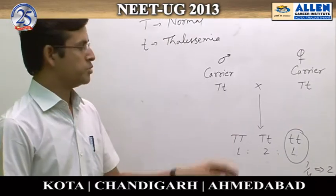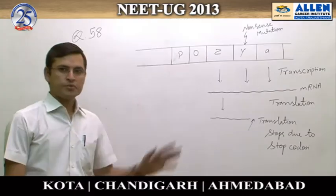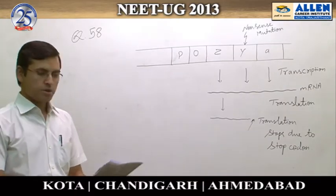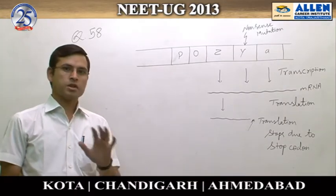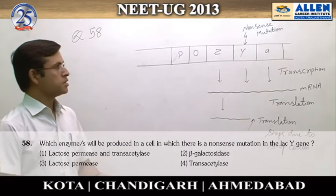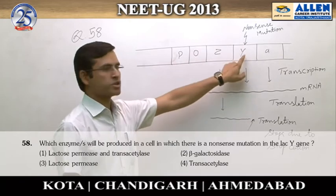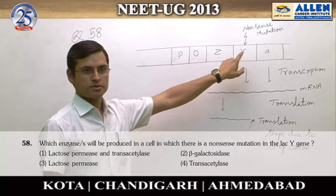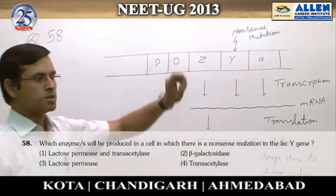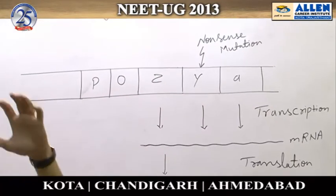Therefore, the answer to question 48 is the fourth option: twenty-five percent. In question number 58, related to the lac operon, we are given that in lac Z a nonsense mutation takes place. In a nonsense mutation, a stop codon is generated in the DNA.